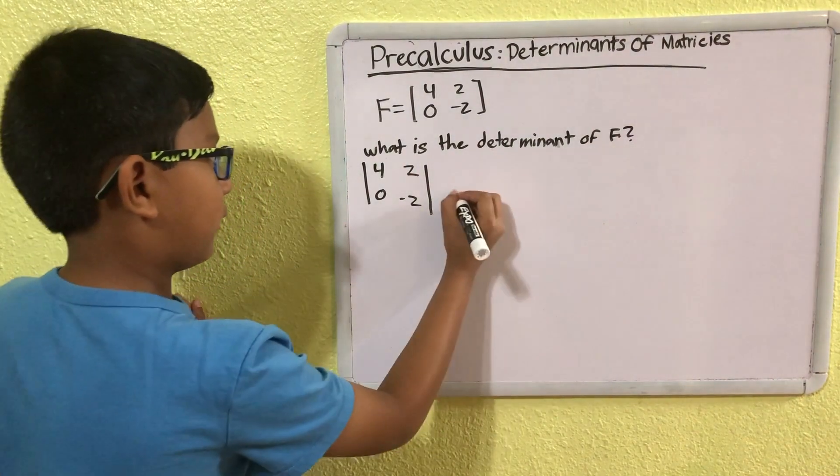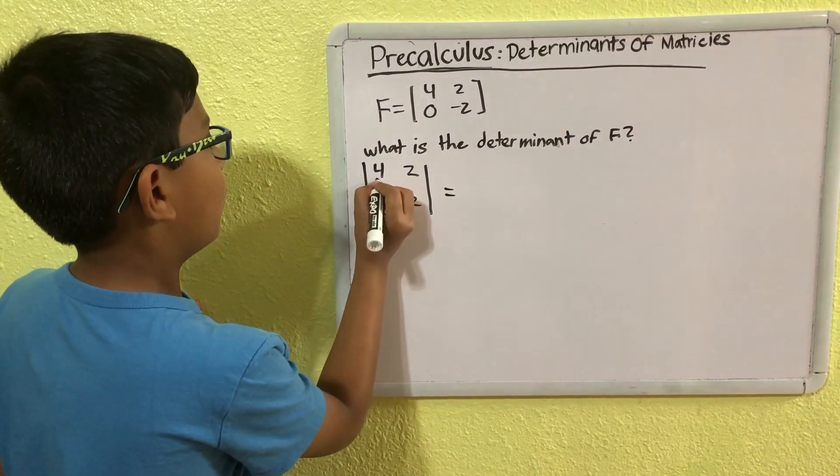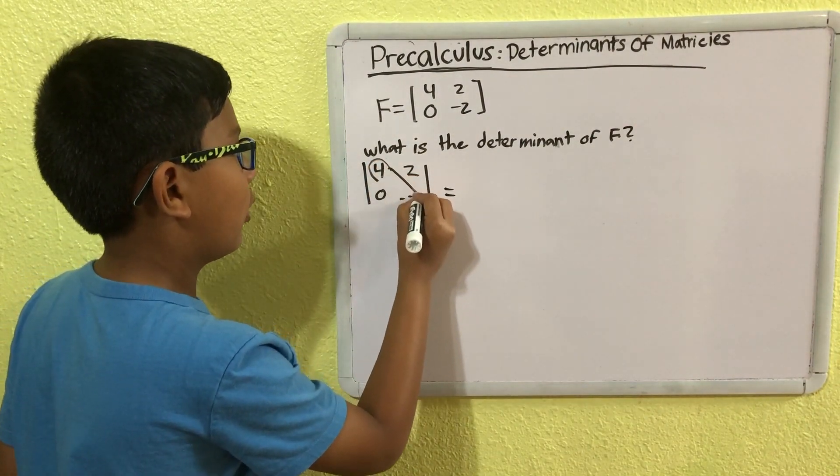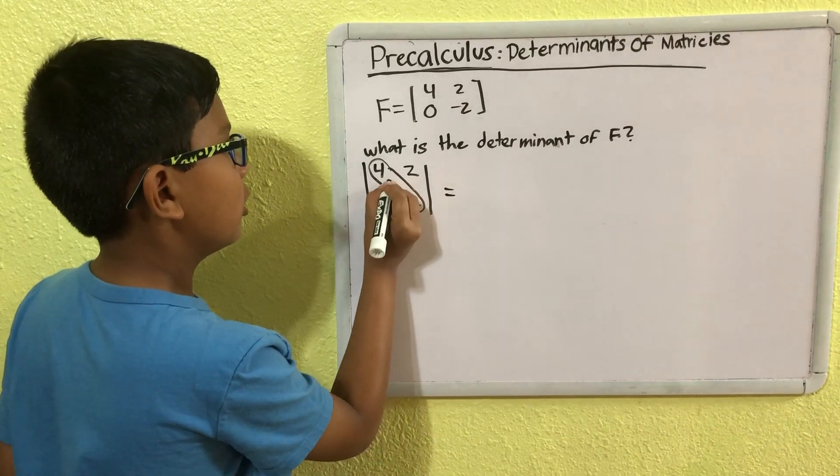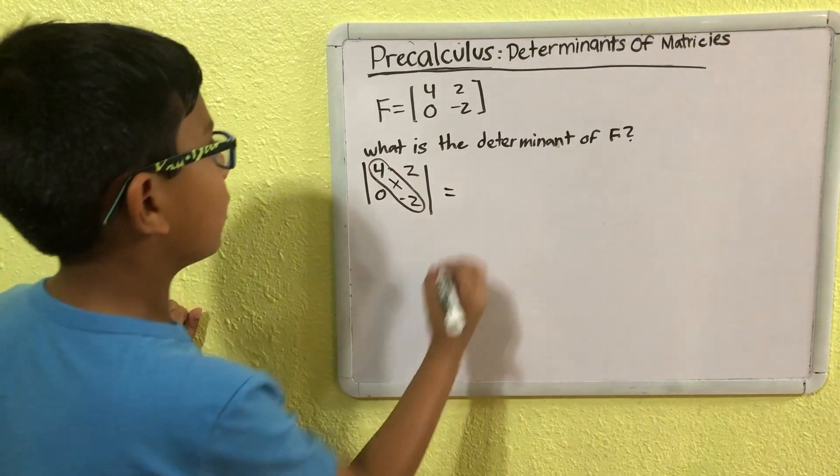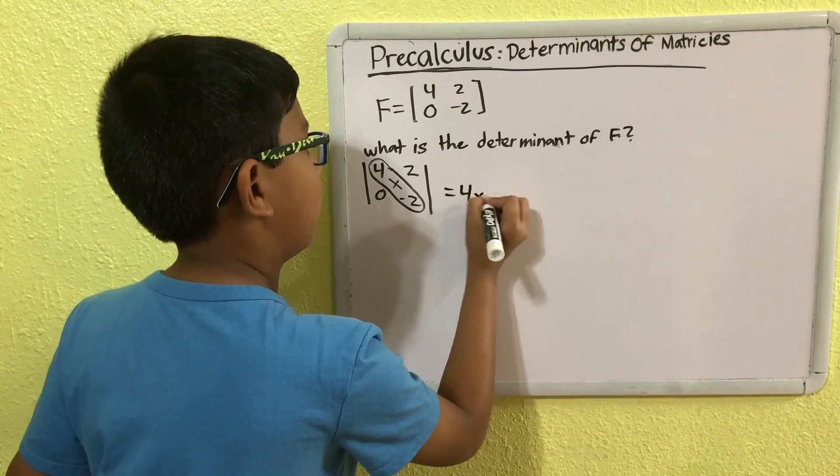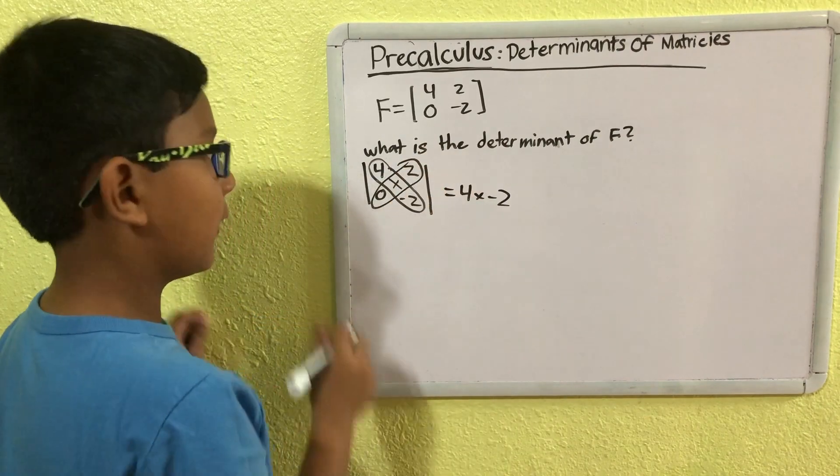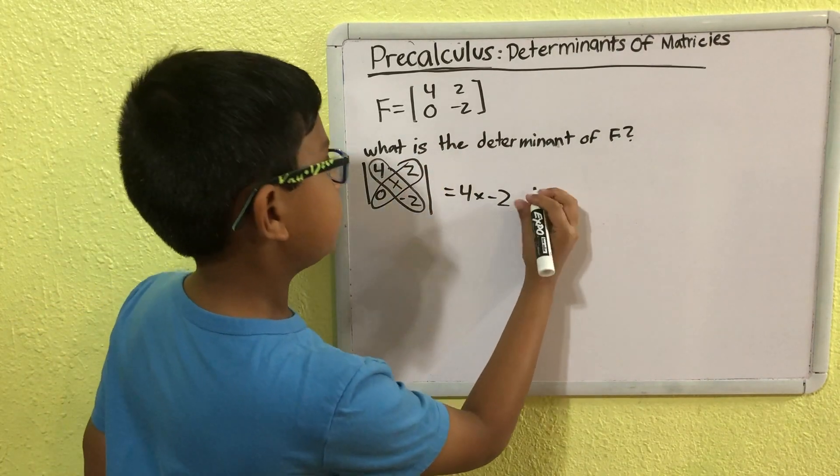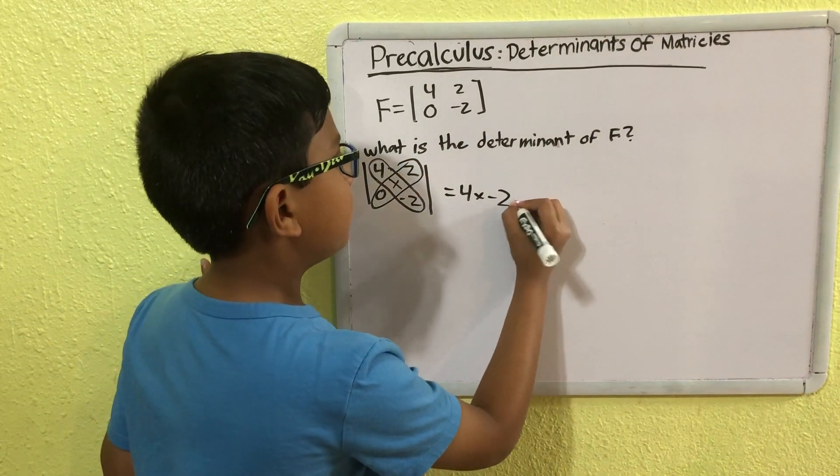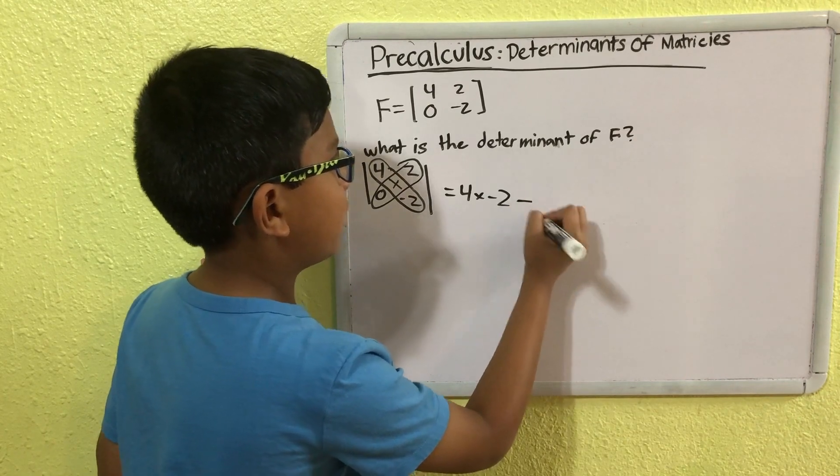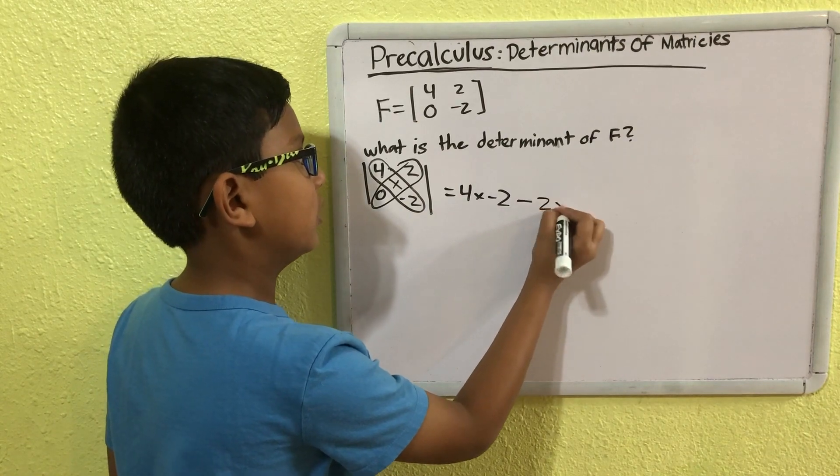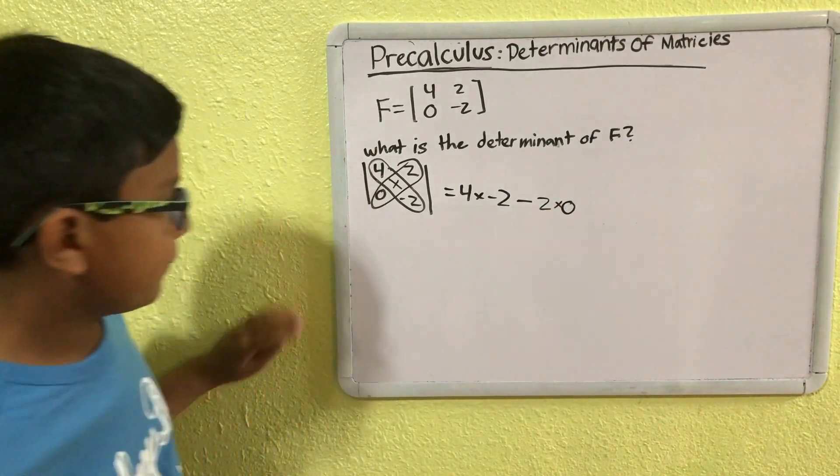And so, this is going to be equal to, so what we first do is we take the cross product of this diagonal. So, 4 times minus 2, and then take the cross product of this diagonal. And then we subtract that from 4 times minus 2, so 2 times 0.